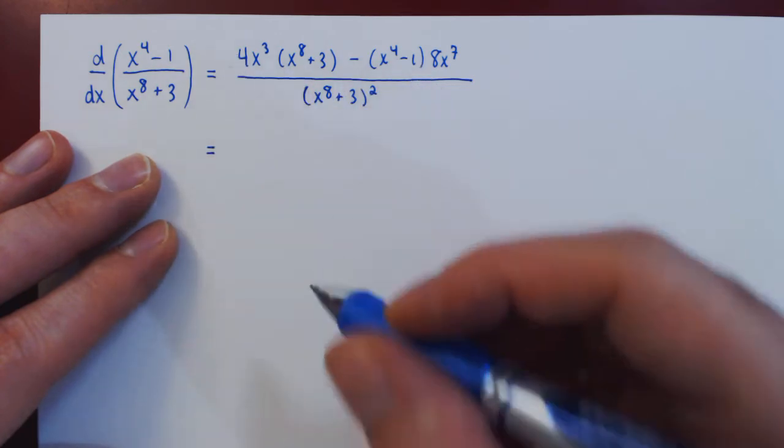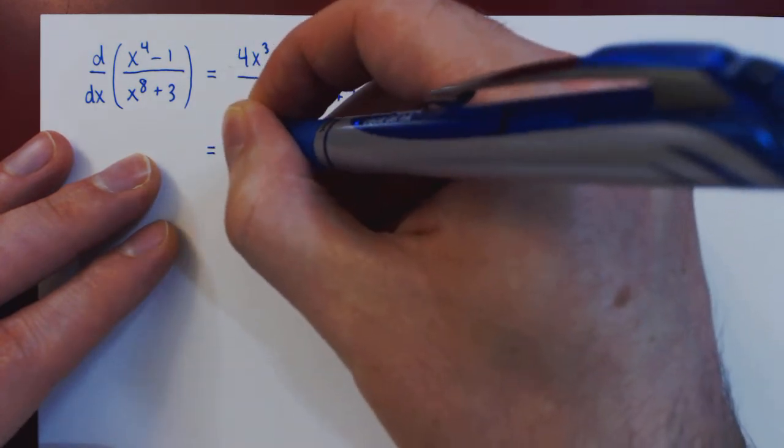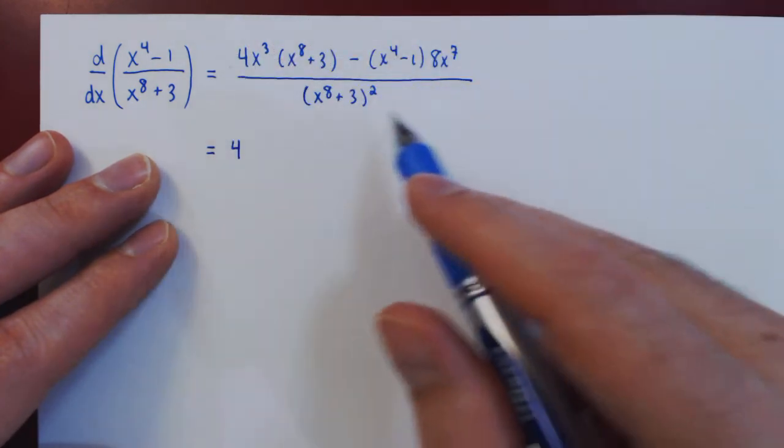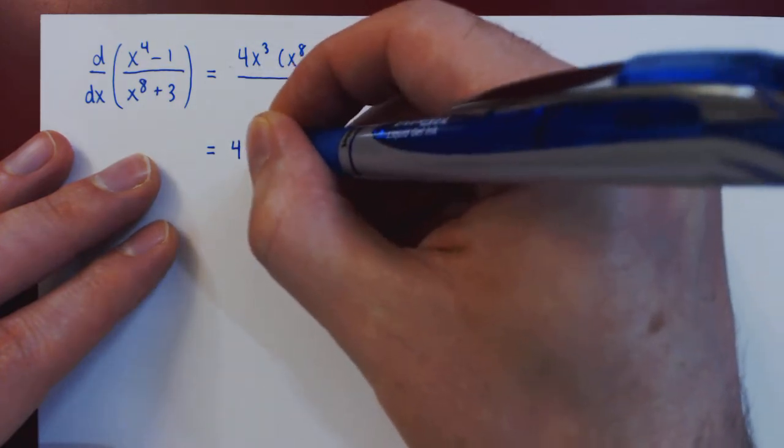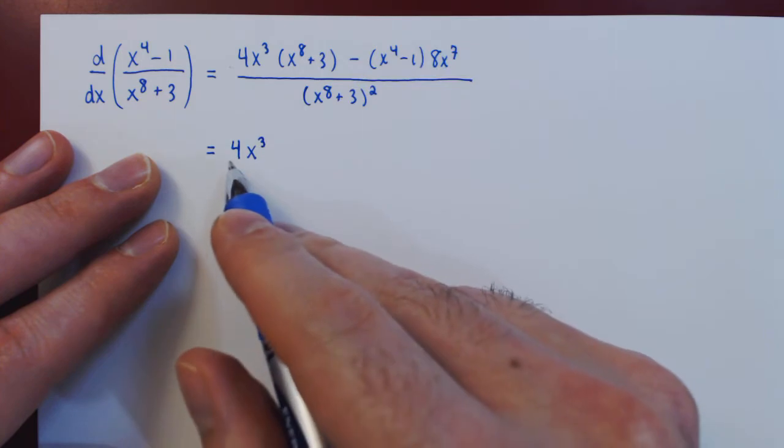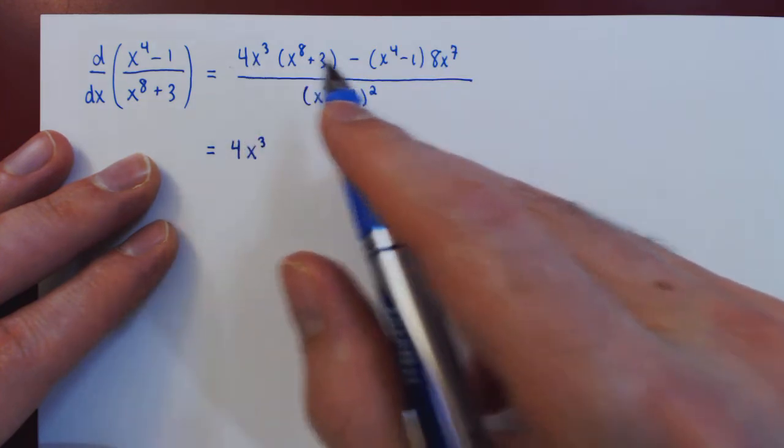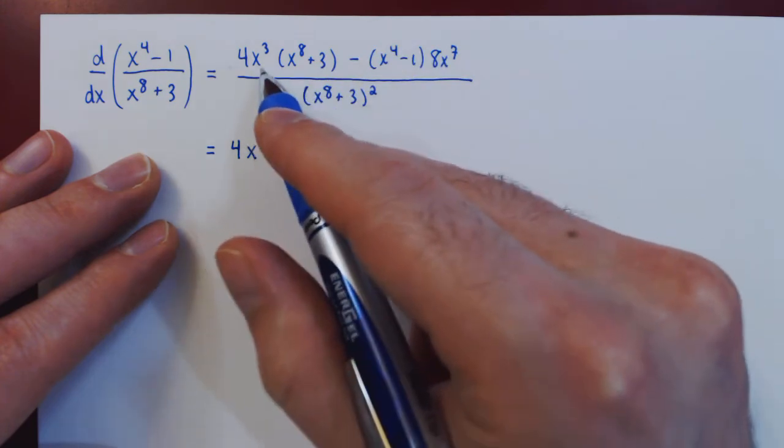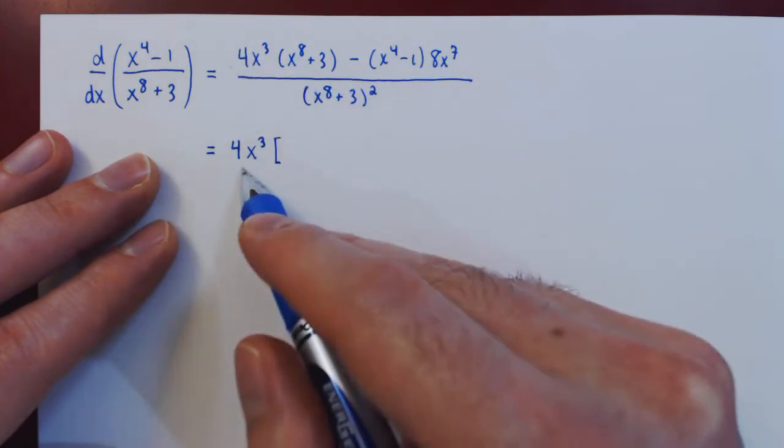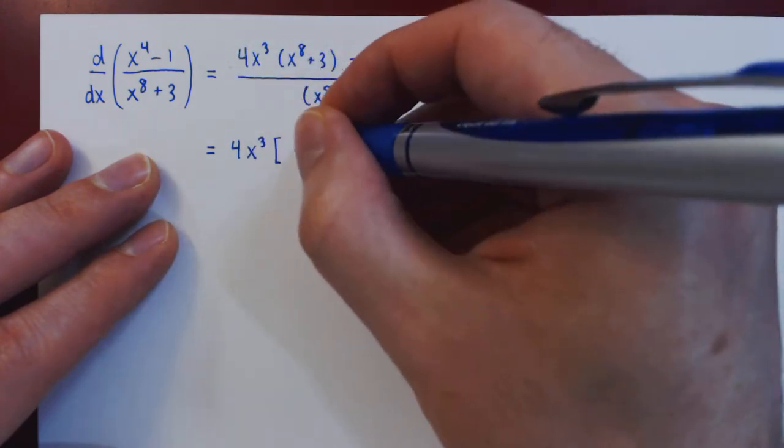So we have a 4 and an 8, we can factor a multiple of 4. Then we have an x cubed and an x to the 7, we can factor a multiple of x cubed. Those are the only two common terms between the first and the second term, so we can write down what's left over. In the first term, we factored all of 4x cubed, so we're left with x to the 8 plus 3.